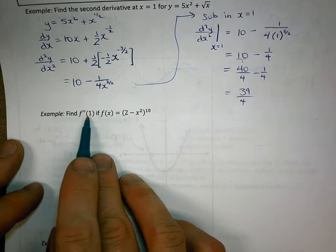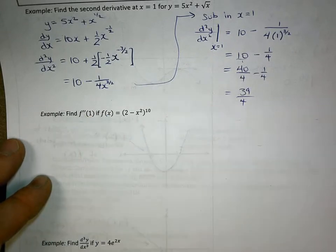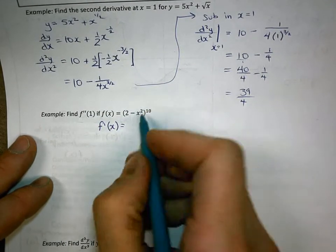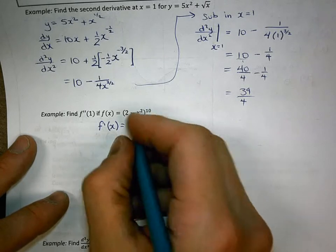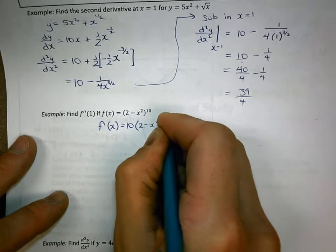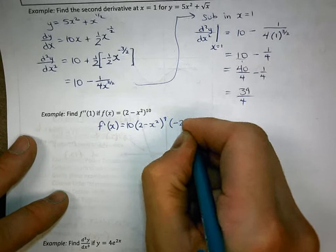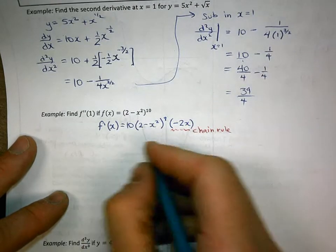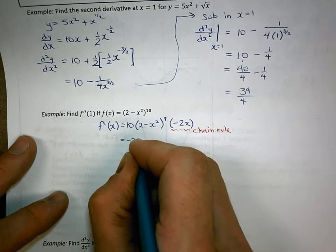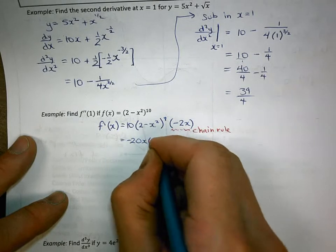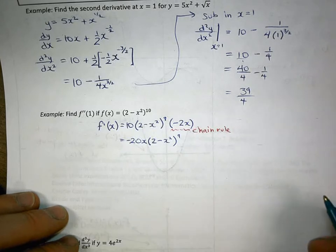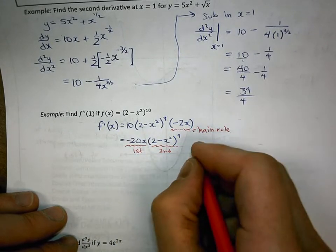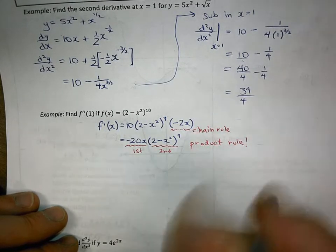Here's another one — find the second derivative at x equals 1 if this is the original function. The first derivative is going to be a chain rule issue because I have a function within a function. So I do the outside function: bring down the 10, write down the inside function, subtract 1. Then I take the derivative of the interior function, which is negative 2x. So I end up with negative 20x times 2 minus x squared to the power of 9. Now I need to take the derivative of this, and since I have two functions multiplied together, it's going to be a product rule situation as well as chain rule.